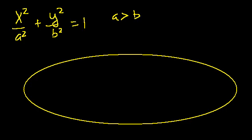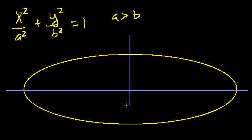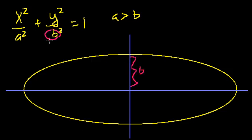Let me draw the axes — the horizontal and the vertical. We've studied the ellipse in good detail so far. We know how to figure out the semi-minor radius, which in this case is b. That's the semi-minor radius because b is smaller than a. If b were greater, it would be the major radius. The major radius is a, and that distance is shown here.